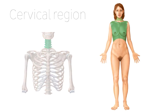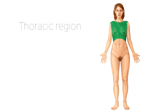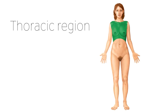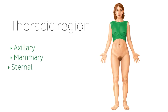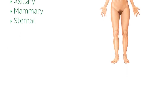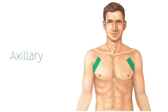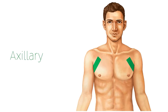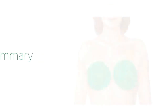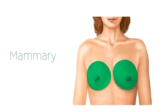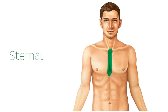The thoracic region, belonging to the axial region, can be broken down into the following smaller regions: the axillary region, the mammary region, and the sternal region. The axillary region refers to the armpit — it is the boundary between the axial and appendicular regions, connecting the two of them. The mammary region is the region of the breast. The sternal region covers the area of the sternum.